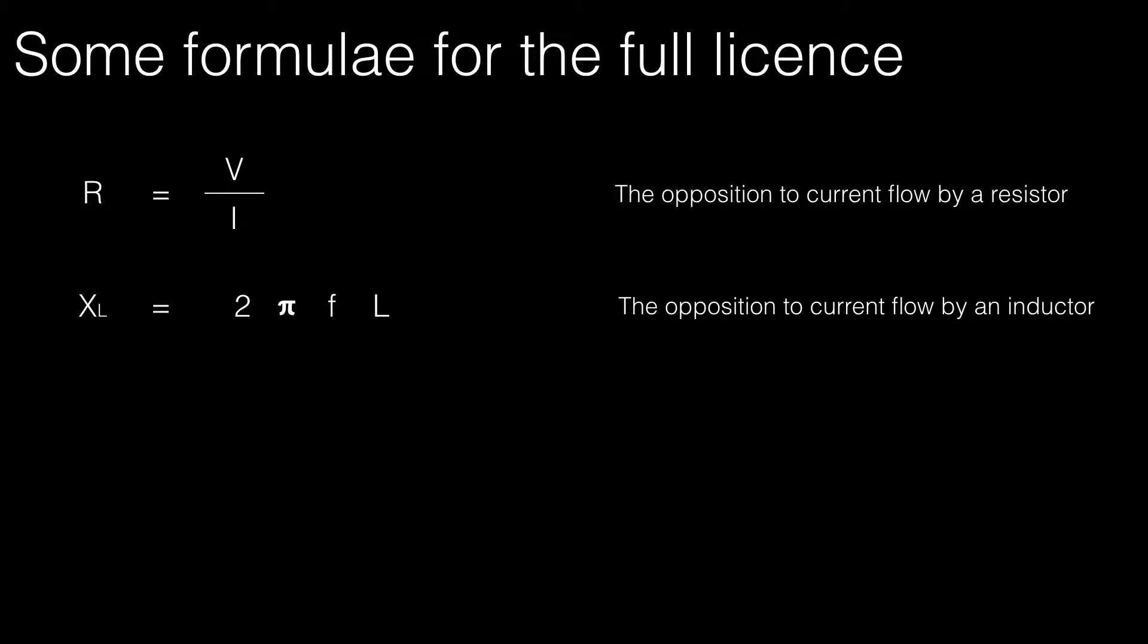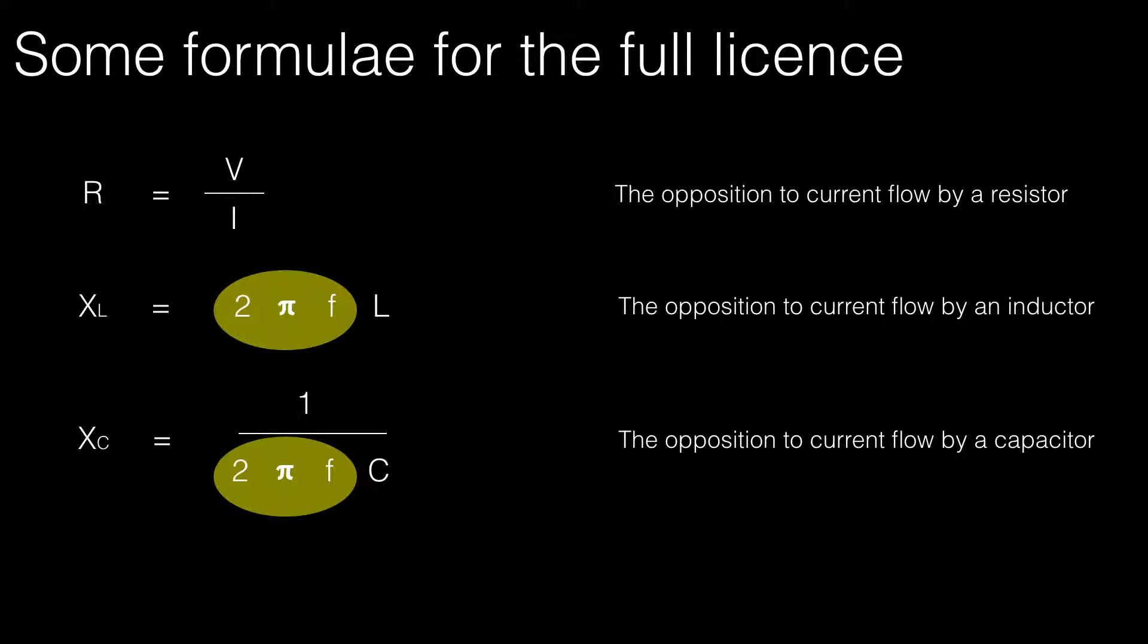At advanced level, you'll look at this formula: the inductive reactance XL equals 2 pi f L, where L is in henrys. That describes the opposition to current flow by an inductor. And XC, the capacitive reactance, equals 1 over 2 pi f C, where C is in farads, describing opposition to current flow by a capacitor.